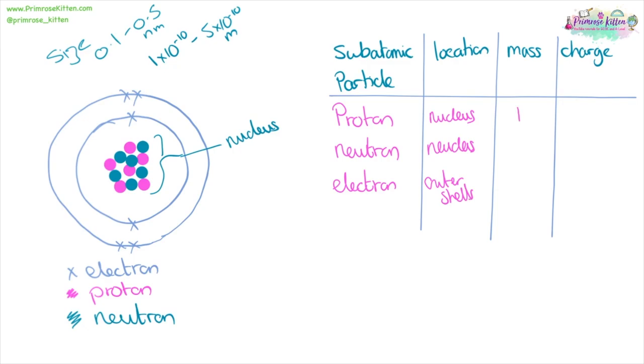Protons have a mass of one. Neutrons have a mass of one. And electrons are incredibly tiny. Their mass is one two thousandths that of a proton or a neutron. Protons have a charge of plus one. Neutrons have no overall charge. And electrons have a charge of minus one.